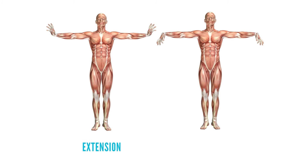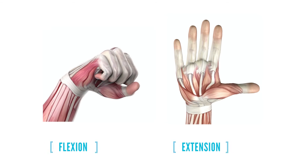Now let's look closer at the fingers and the wrist. When the dorsum of the hand moves towards the posterior forearm, that is wrist extension. When the palm moves towards the anterior forearm, that is called wrist flexion. When the fingers are flexed they move towards making a fist, and when they're extended the hand is completely open.